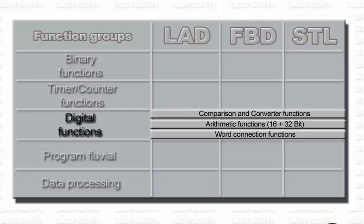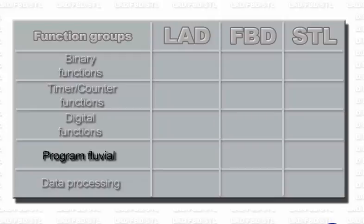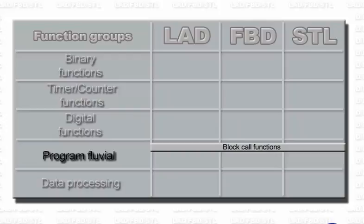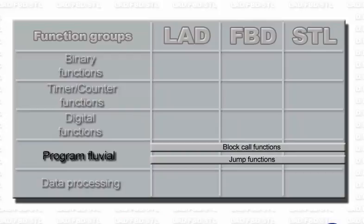The data formats used range from BCD-coded numbers to fixed point and floating point numbers. The next function group is a prerequisite for comfortable and well-structured program organization. Block calls are the most important aid for this. A block is a self-contained section of the user program — a sub-routine to all intents and purposes. By calling a block, you decide which program sections you want to process at a given moment. Within a block, the program flow is controlled by means of jump functions, which allow you to execute or skip certain program sections depending on the current result of logic operations.